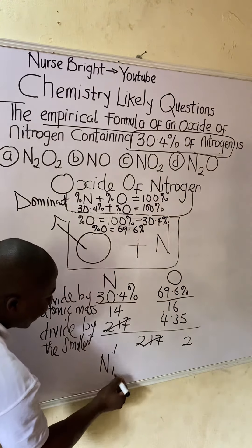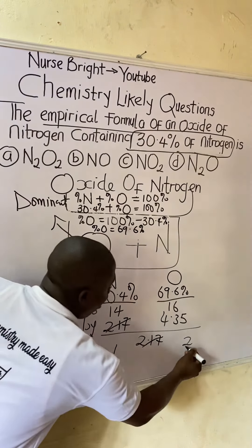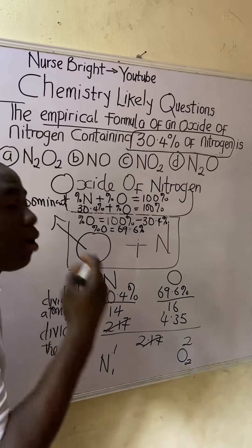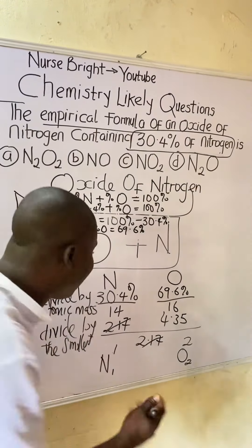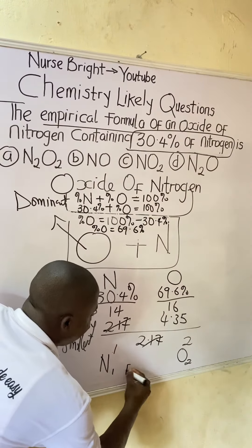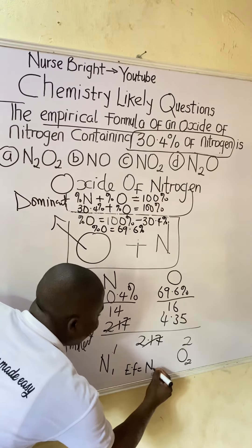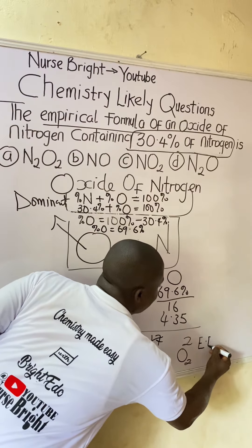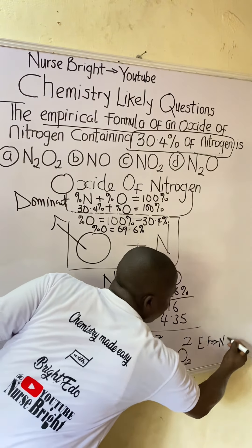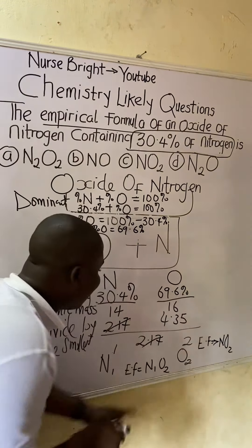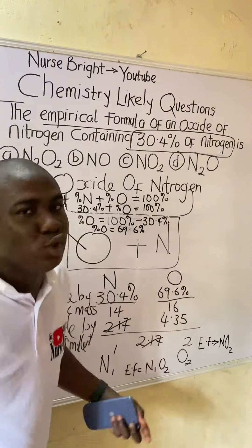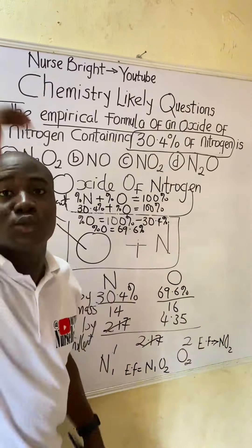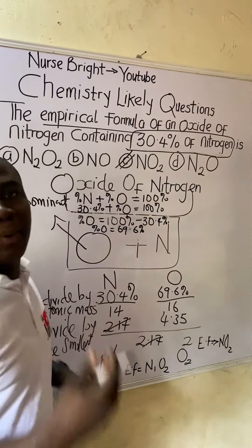In summary, the ratio for nitrogen is 1 and the ratio for oxygen is 2. Bringing this together, the empirical formula is N₁O₂, and since the subscript 1 is not written, it simplifies to NO₂. The empirical formula is NO₂, which is option C.